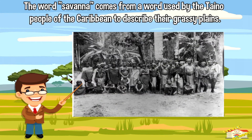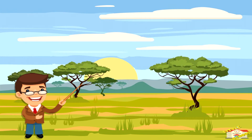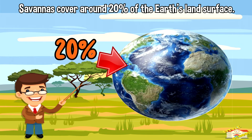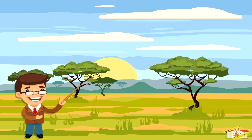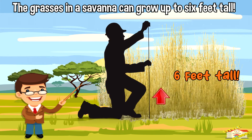The word savannah comes from a word used by the Taino people of the Caribbean to describe their grassy plains. Savannahs cover around 20 percent of the earth's land surface. The grasses in a savannah can grow up to six feet tall.